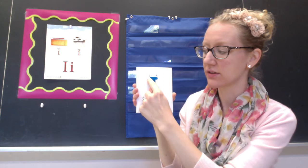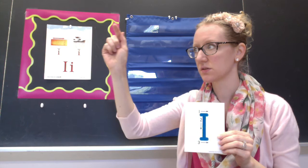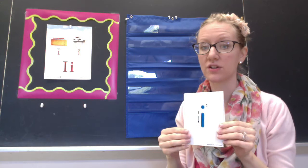To make a capital I, you start at the top. You're going to make a straight line down, small cross on the top, small cross on the bottom. This one's pretty easy, let's try it in the air. Straight line down, small cross on the top, small cross on the bottom. One more time. Straight line down, small cross on the top, small cross on the bottom.